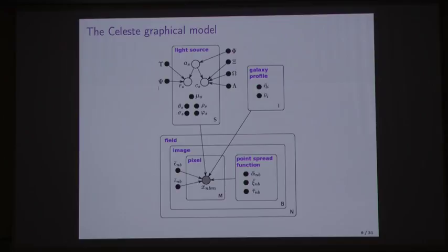The latent variables in the model include things like every light source has a bunch of latent variables. We have A_S, which is a Bernoulli random variable indicating whether a particular light source is a star or galaxy. We have R_S, which indicates the brightness in a reference band for that light source. We have C_S, which is a random vector of colors for every particular light source. A color corresponds to the colloquial definition, but astronomers define it more formally as the log ratio of brightnesses in adjacent filter bands.